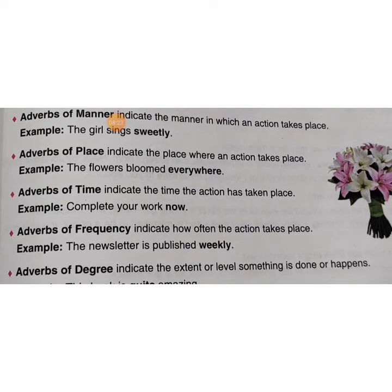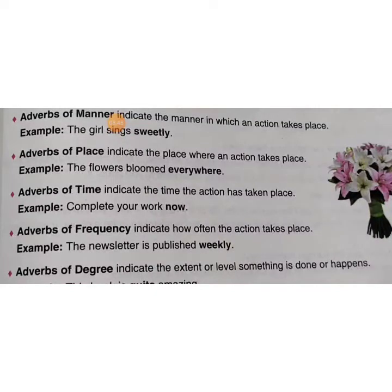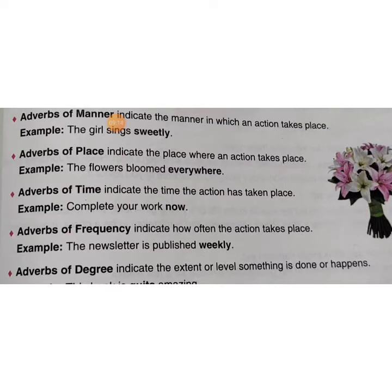Next is adverb of frequency — adverb of frequency indicates how often the action takes place, means koi kaam kitni baar ya kis gati se ho raha hai. For example: 'The newsletter is published weekly.' You can change it to monthly as well. So weekly, monthly, daily, yearly — these are adverbs of frequency telling us how often an action is done.